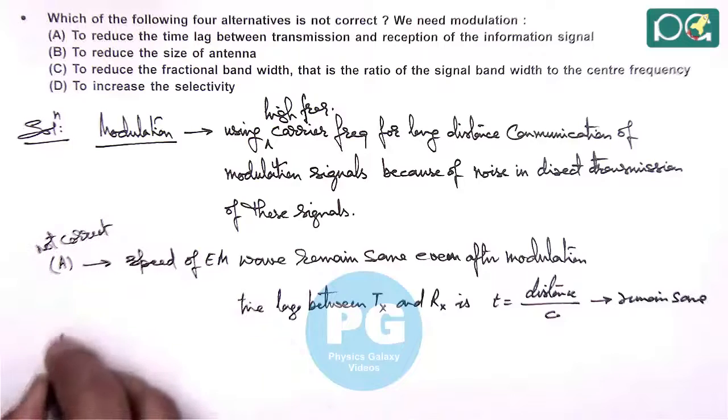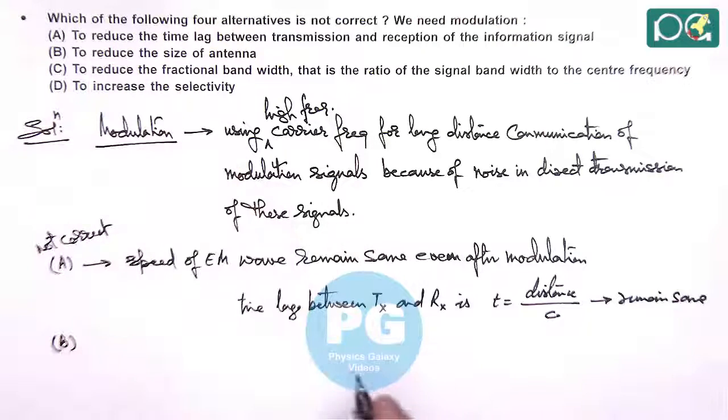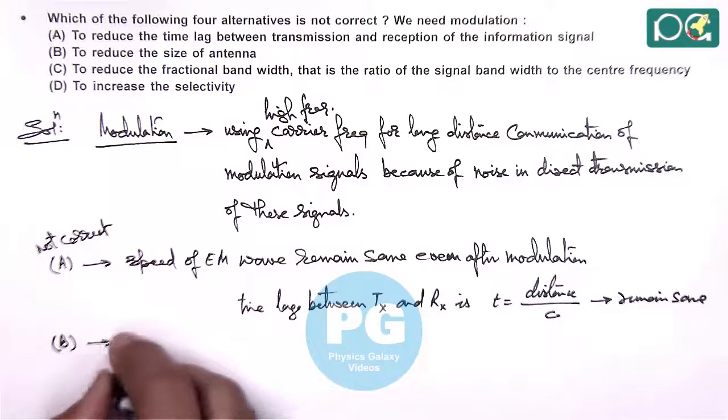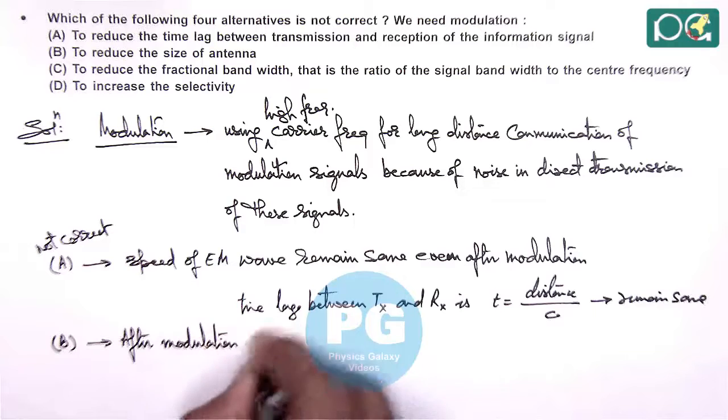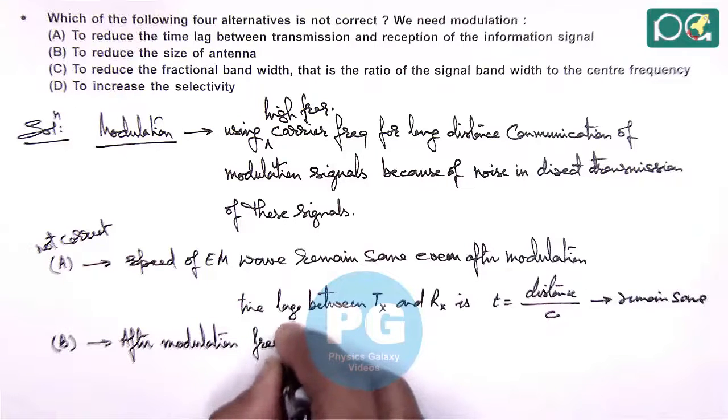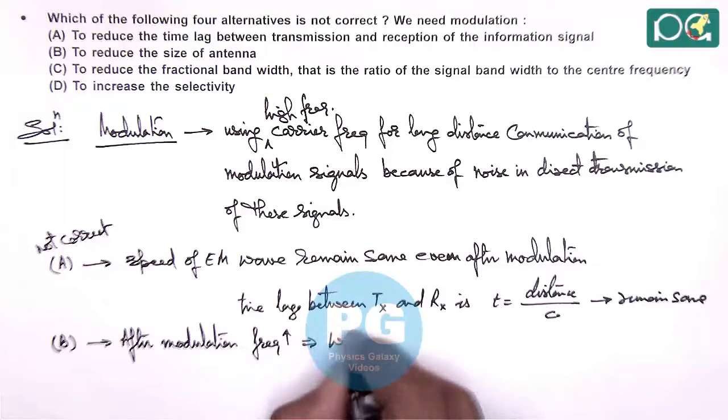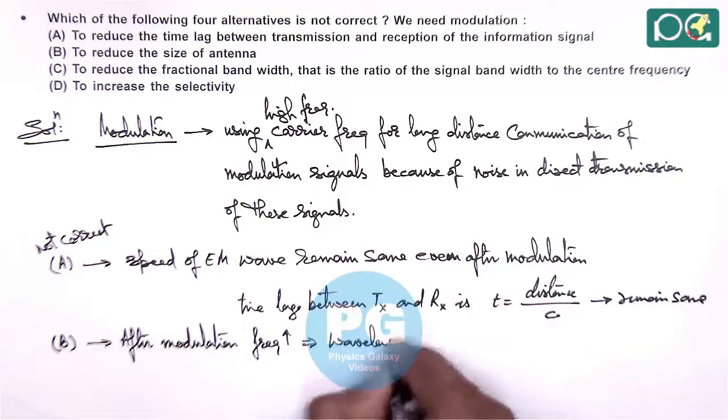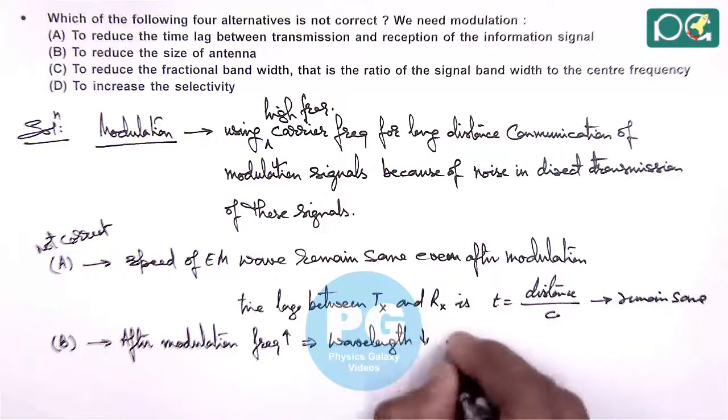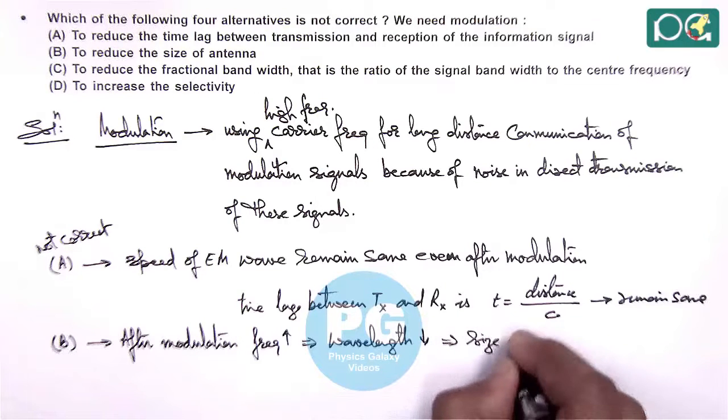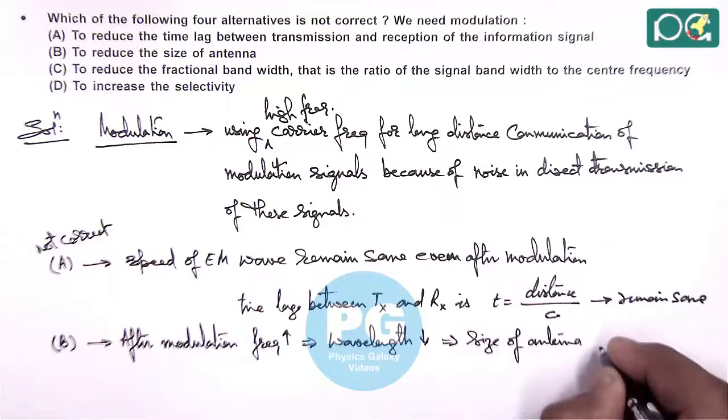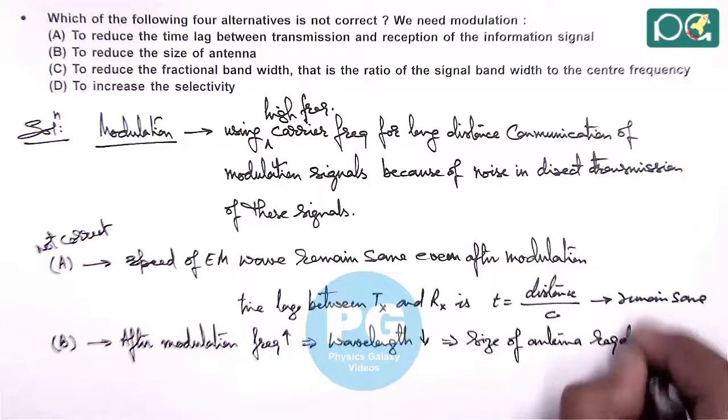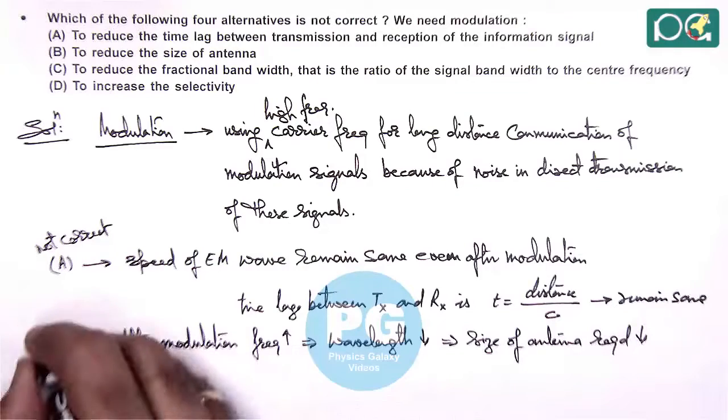If we talk about option B which says to reduce the size of antenna, so we can say after modulation frequency increases, this implies here wavelength decreases, this implies size of antenna required decreases. So option B is correct.